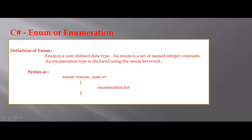Definition of Enum: Enum is a user defined data type. Enum is a set of named integer constants. Enum and enumeration type is declared using the Enum keyword.